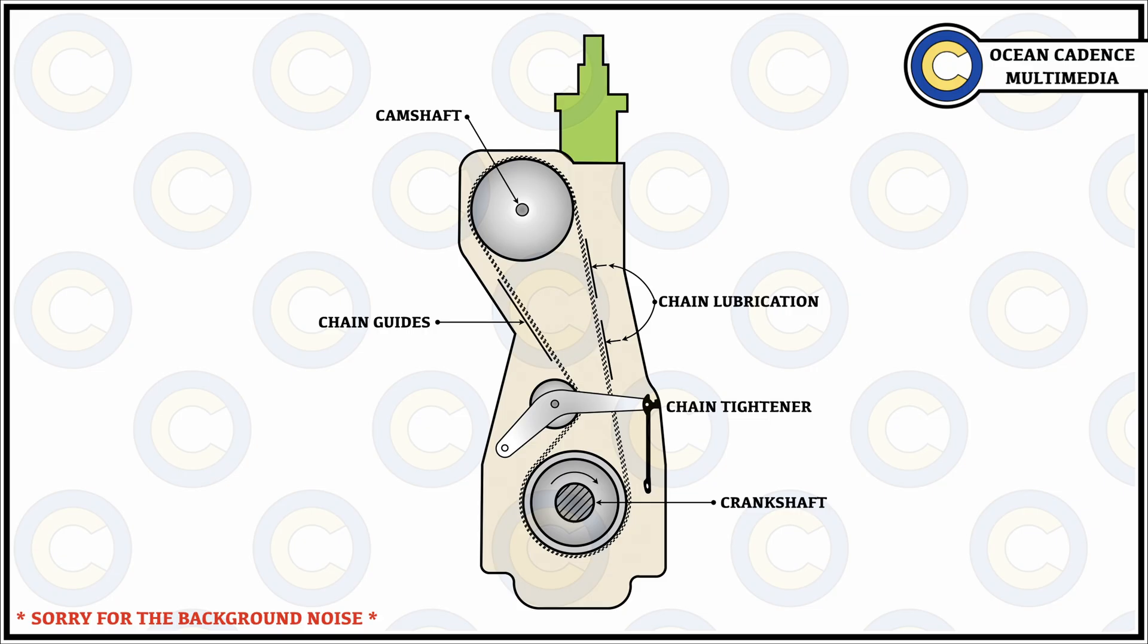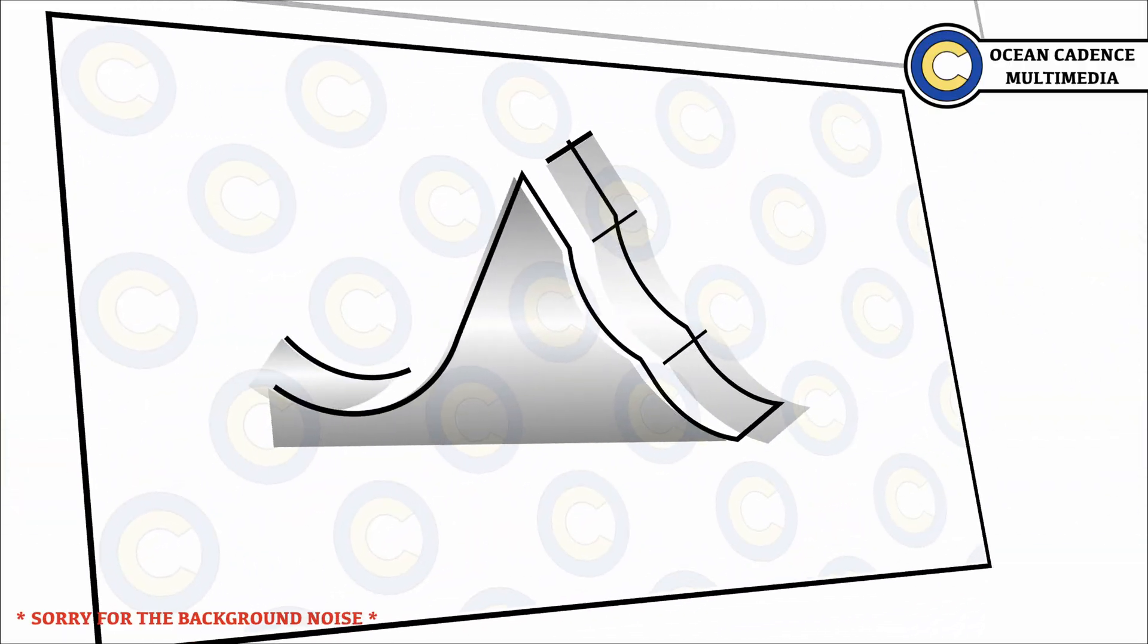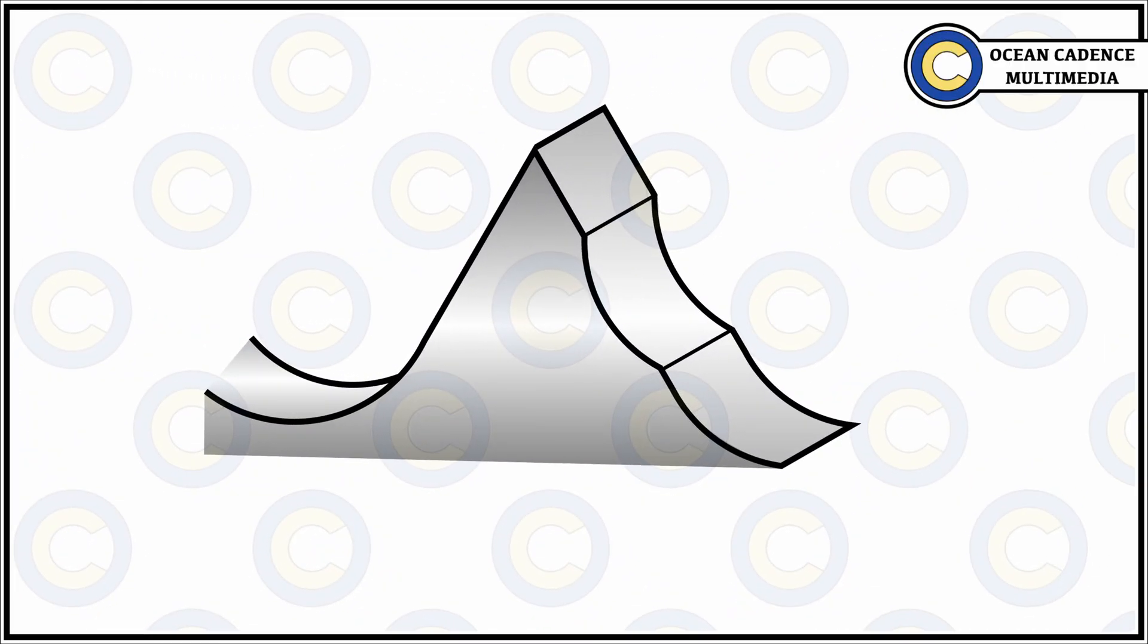Post that, we'll move to the sprocket faces or the teeth where we have to notice the wear down or the breakages that can possibly happen. In this case, on the teeth surface, what we'll notice is that instead of being a properly graded or inclined surface, we'll have indentations or pigmentations that can help you identify visibly if there has been any loss of metal.